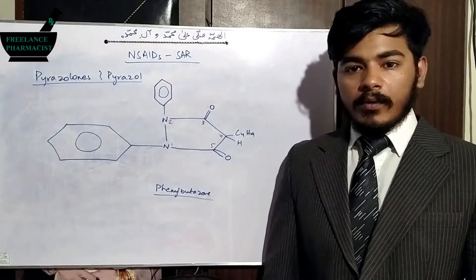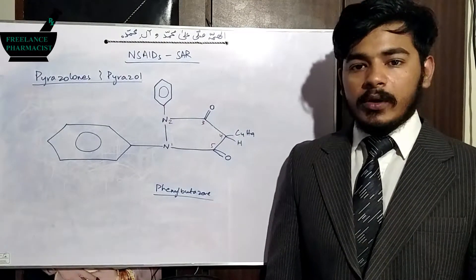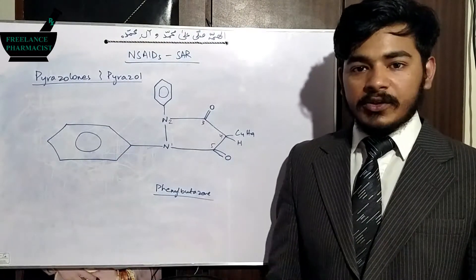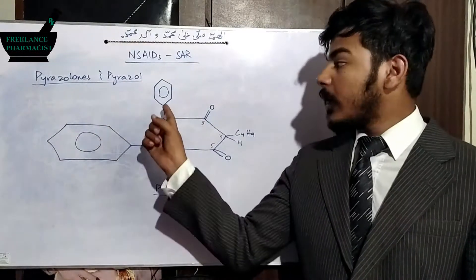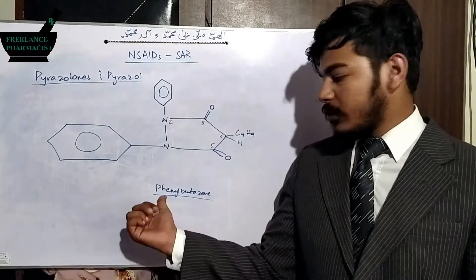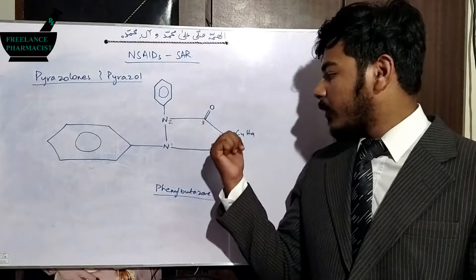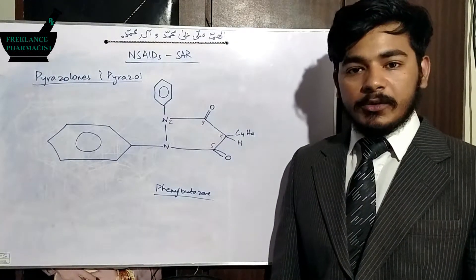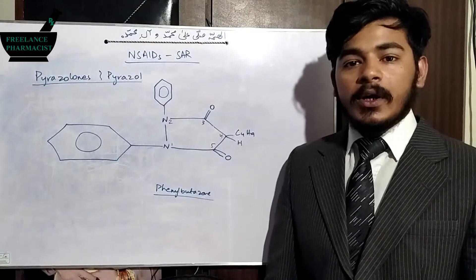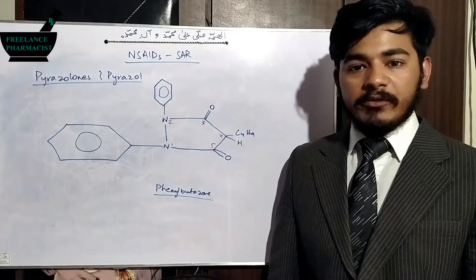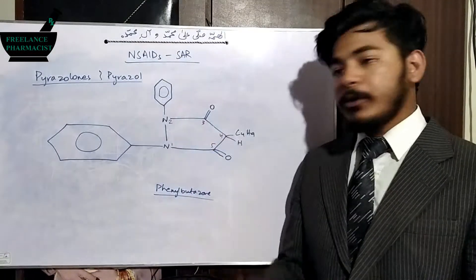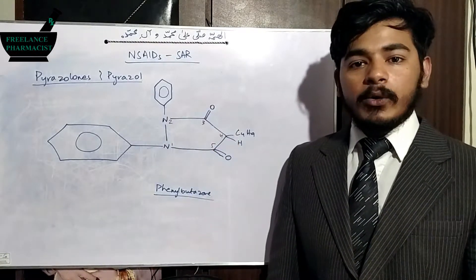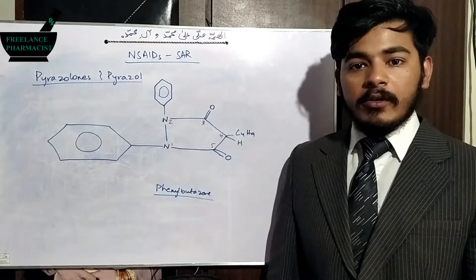The first drug of pyrazolodione is phenylbutazone. On the R1 modification site a phenyl substitution is present — also indicated by its name — and on the R2 modification site a butyl substitution is present. Both the phenyl and butyl groups increase the drug's lipophilicity. The butyl group also protects the ketonic substitutions from biotransformation and biodegradation.